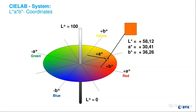In this example on the screen, we have an L value of positive 58, an A value of positive 30, and a B value of positive 36. Using our LAB coordinates, we look at the A axis to find where we lie, then the B axis to find our point, and lastly the L axis to identify exactly what color we have. In this case, we have a light orange color.